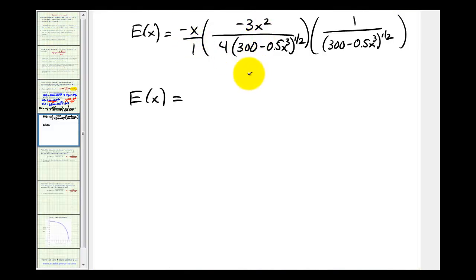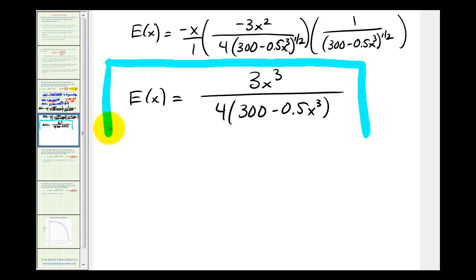So the numerator would be positive 3 x cubed. The denominator would be 4 times 300 minus 0.5 x cubed to the positive 1 power, because we'd add our exponents. 1 half plus 1 half would be to the first power. So this is the elasticity function that will measure how sensitive the demand is to a slight change in price.